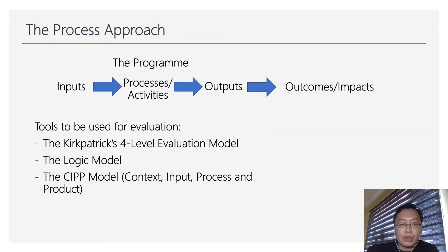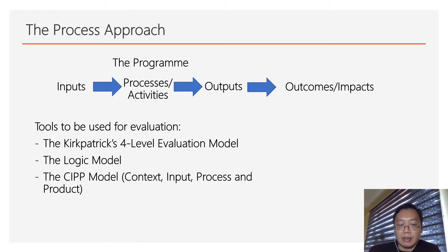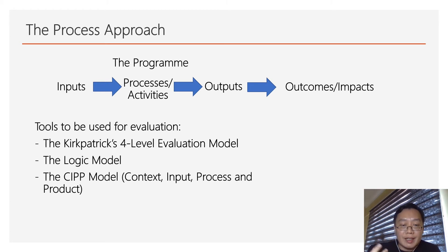The process approach to evaluation takes a slightly different view. You look at the process itself — in other words, input, the processes or activities, outputs and outcome or impacts. Tools that are used to evaluate programs would be the Kirkpatrick's four-level evaluation model, the logic model, and the common one is the CIPP model: context, input, process and product model. If you are interested in using the process approach, you need to read up on all these models to understand the context in which they can be used and their advantages and disadvantages.